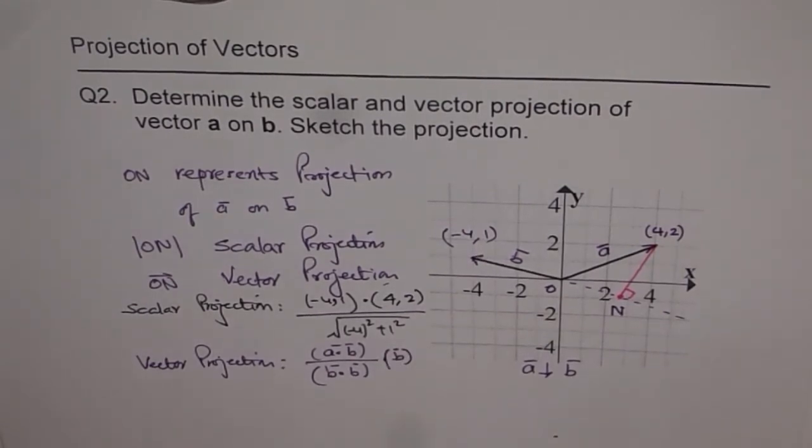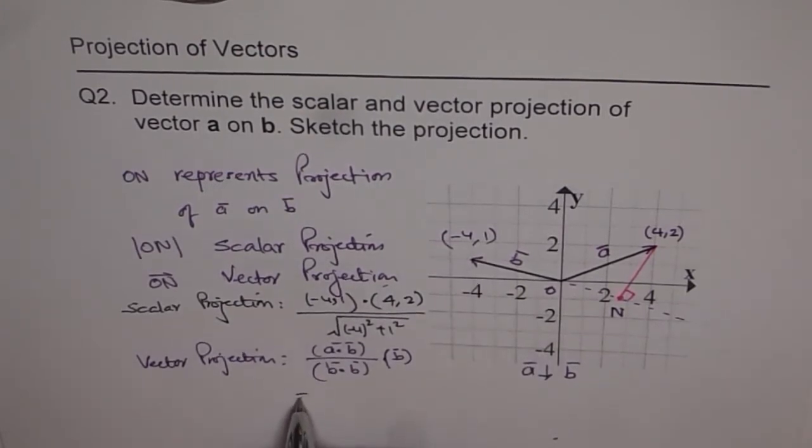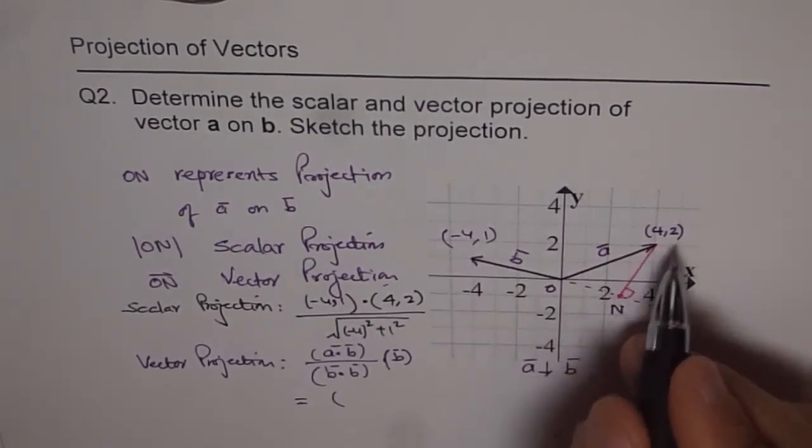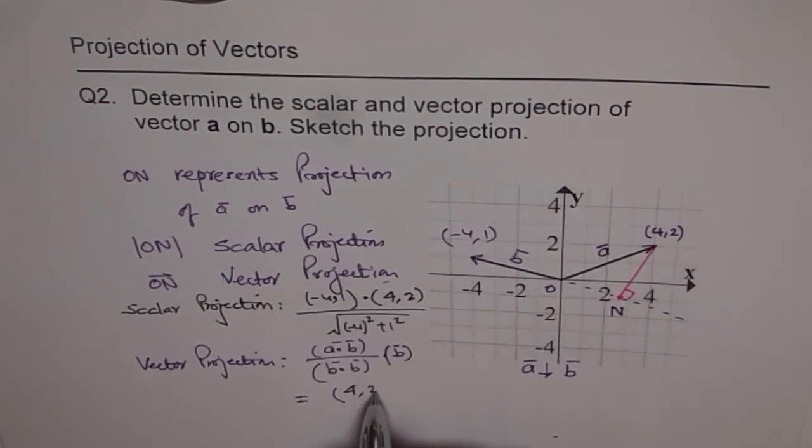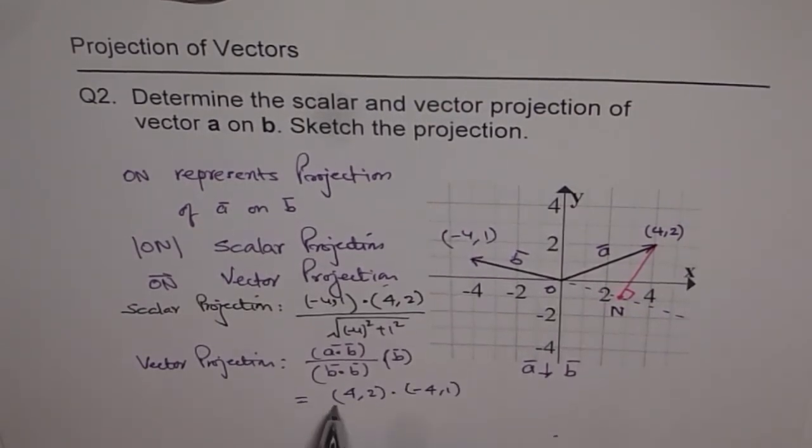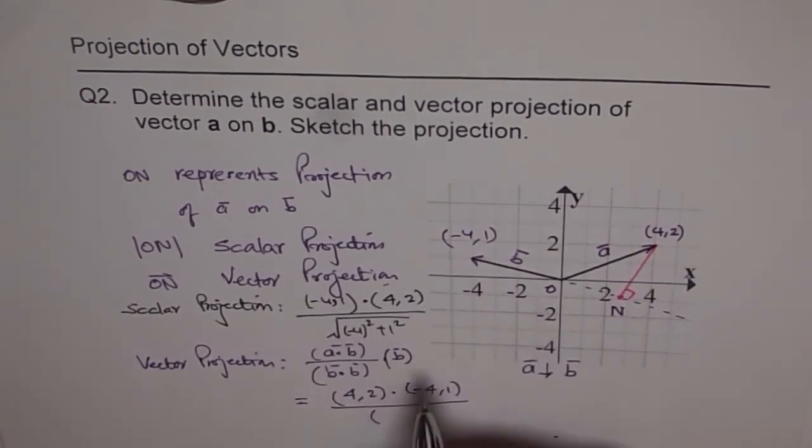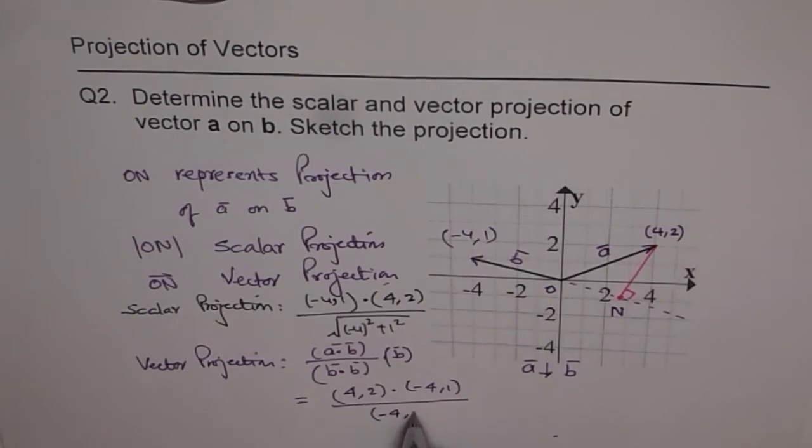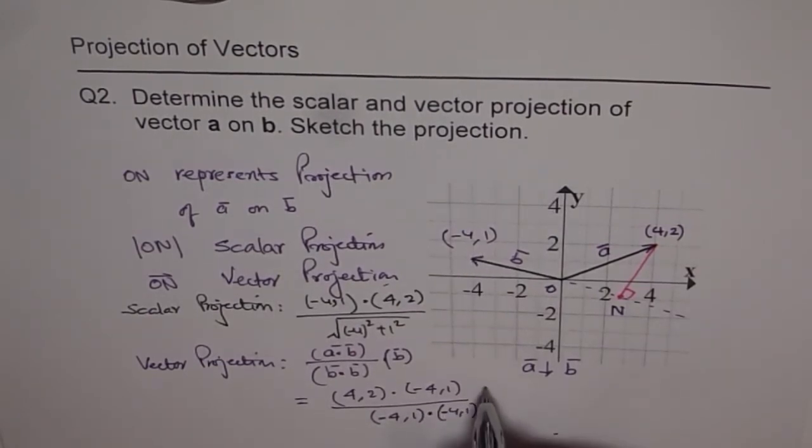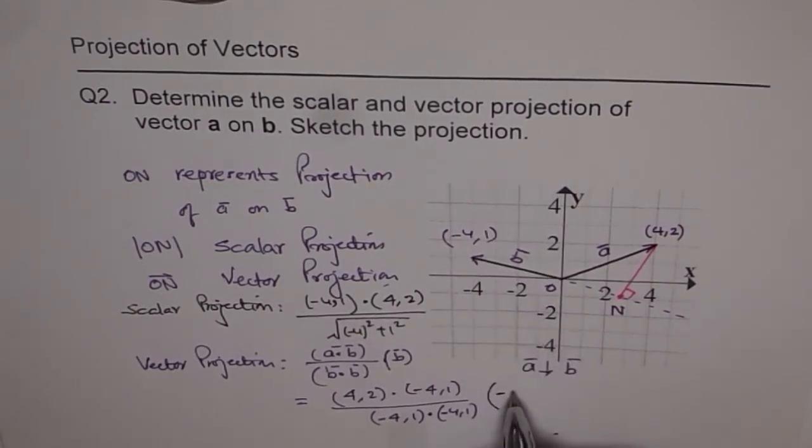So if you have to write in this form, then it should be written as A is 4, 2. So 4, 2 dot minus 4, 1, divided by minus 4, 1 dot minus 4, 1 scalar multiple of B, which is minus 4, 1. So that gives you the vector projection.